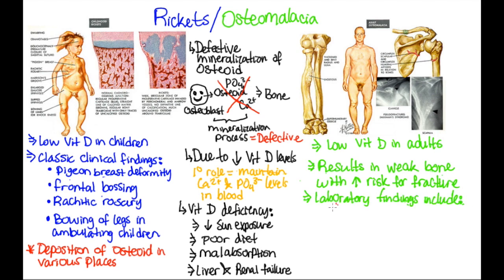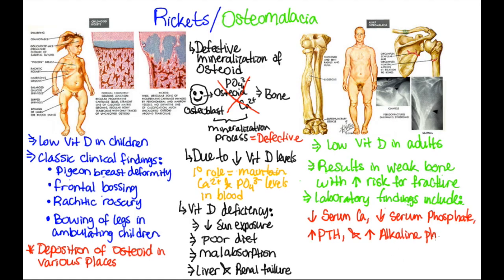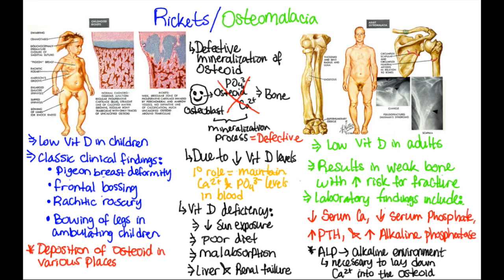Laboratory findings in osteomalacia include decreased serum calcium, decreased serum phosphate, increased PTH, and increased alkaline phosphatase. Calcium and phosphate will be down because of vitamin D deficiency. PTH will be up because there is low calcium. The alkaline phosphatase will be elevated — whenever there's activation of osteoblasts, there's going to be increased alkaline phosphatase.